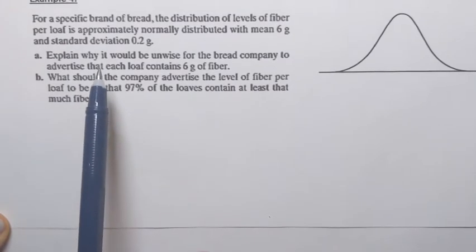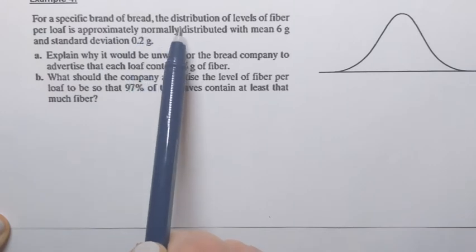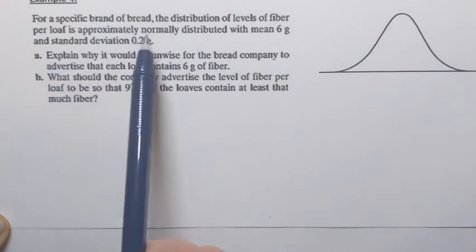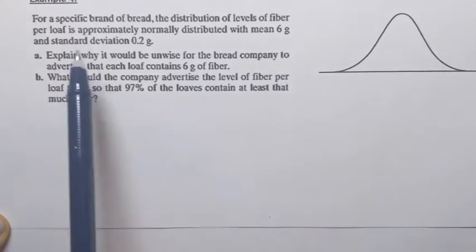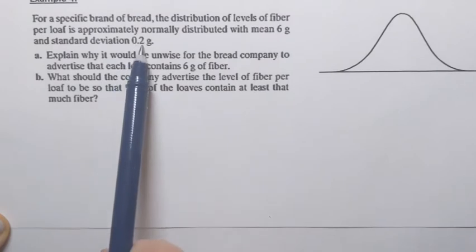We're going to try the following example. For a specific brand of bread, the distribution of levels of fiber per loaf is approximately normally distributed with mean 6 grams and standard deviation 0.2 grams.